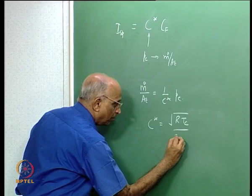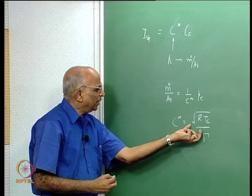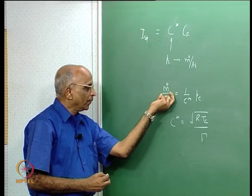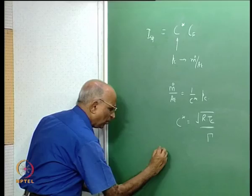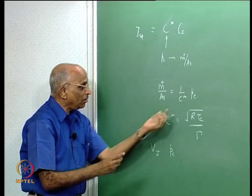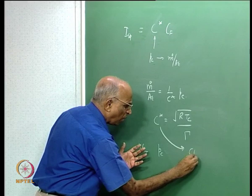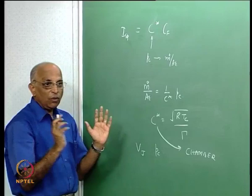C-star was a function of √(R·Tc) divided by Γ, where Γ = √[γ × (2/(γ+1))^((γ+1)/(γ−1))]. It tells: given a mass flow rate through the nozzle, what chamber pressure do I get? And we've been saying all along that to get a high value of Vj, I need a high chamber pressure. Therefore C-star tells you the capacity of whatever is in the chamber to generate high pressure. C-star is not a function of nozzle performance, but of how well the chamber can build up high pressure.